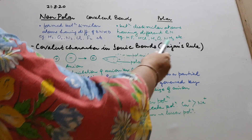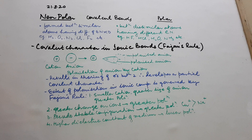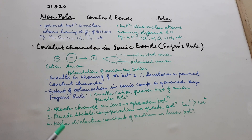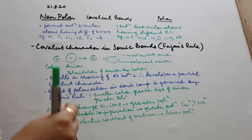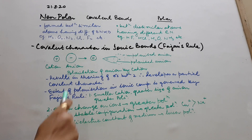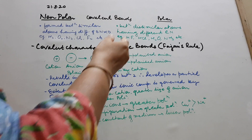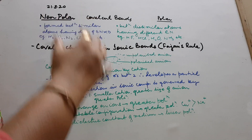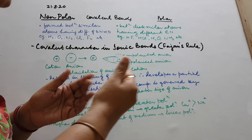So what is the extent of covalent character that ionic compounds have? We study this with the help of Fajan's rule. This is very important — you can always expect questions based on this in tests, exams, or competitions. Prior to Fajan's rule, try to understand one term: polarization. Fajan's rule and polarization go parallel together — they are more or less one and the same thing.